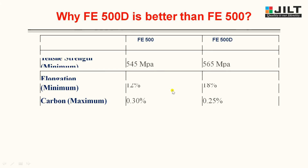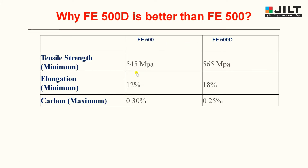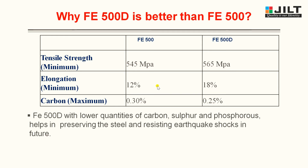The tensile strength of FE500 is 545 N/mm² but for FE500D it is 565 N/mm² — a difference of about 20 N/mm². For elongation, FE500 has 12% while FE500D has 18%. Better elongation is an important property, and FE500D clearly outperforms FE500 here. Carbon composition for FE500 is 0.30% while for FE500D it is 0.25%. Lower carbon, sulfur, and phosphorus in FE500D helps preserve the steel and resist earthquake shocks.